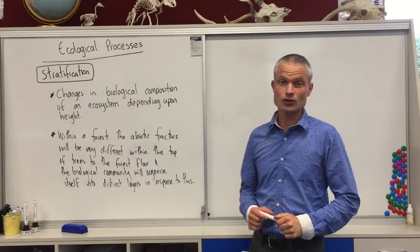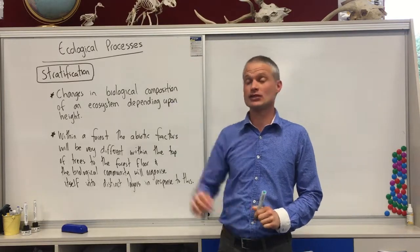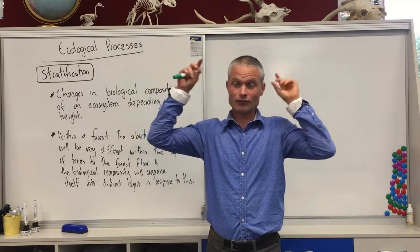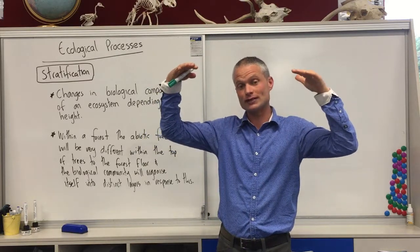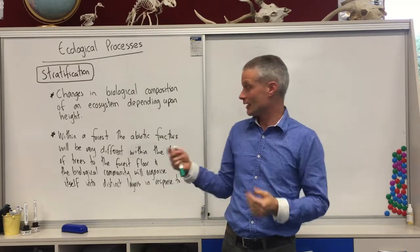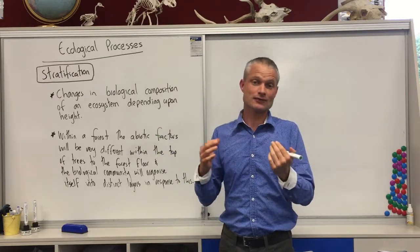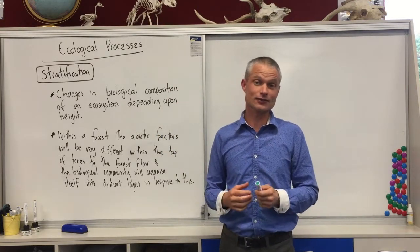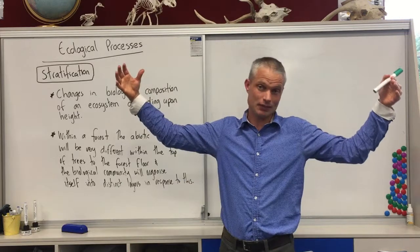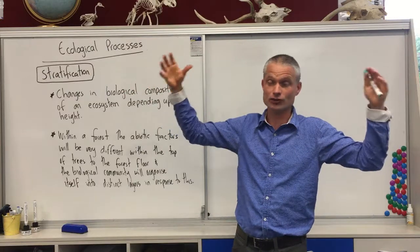Stratification is another way that biological systems organise themselves, and this one is a pattern depending on the heights that species occupy. It's commonly applied to a forest because the species that occur right at the tops of the trees are quite different to the species that exist lower down in the forest, depending on changes in the abiotic factors. You've got less light the further down you go, so plants have adapted different characteristics to photosynthesise and produce their own food. You've got the big canopy trees right up the top that spread out and capture all of the sunlight and dominate that ecosystem.